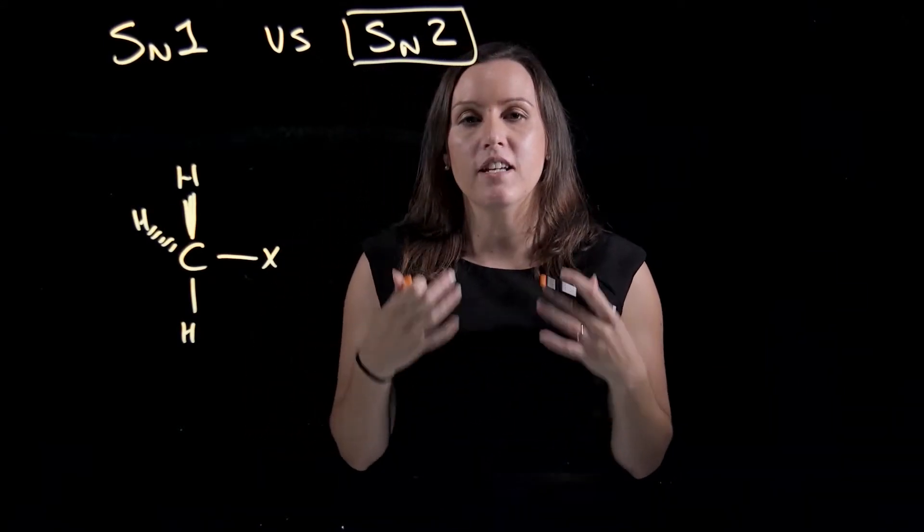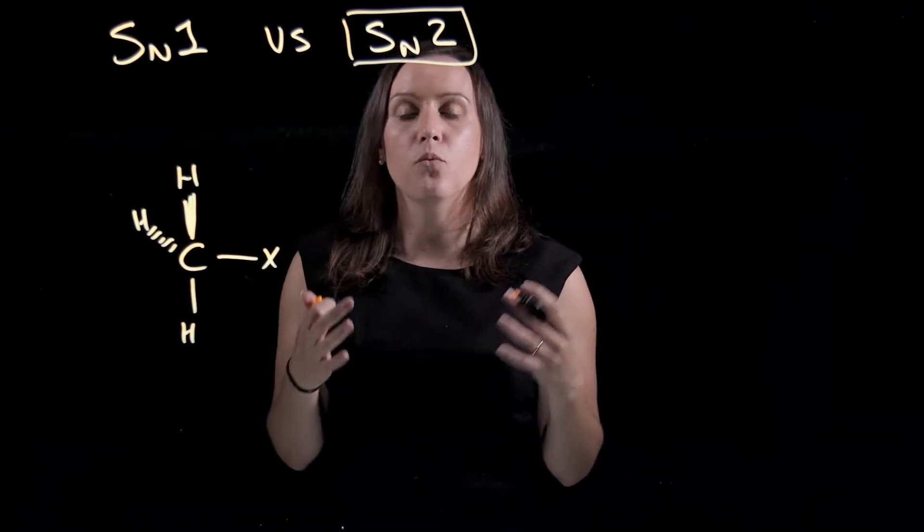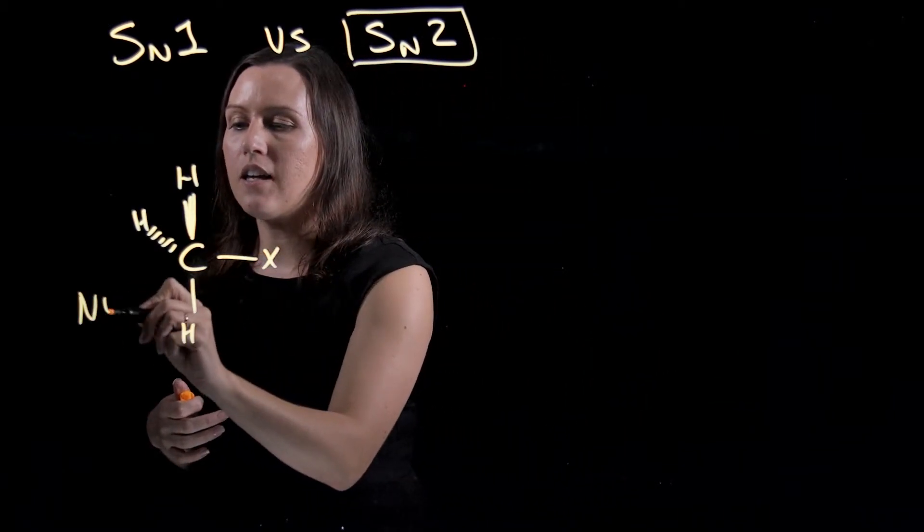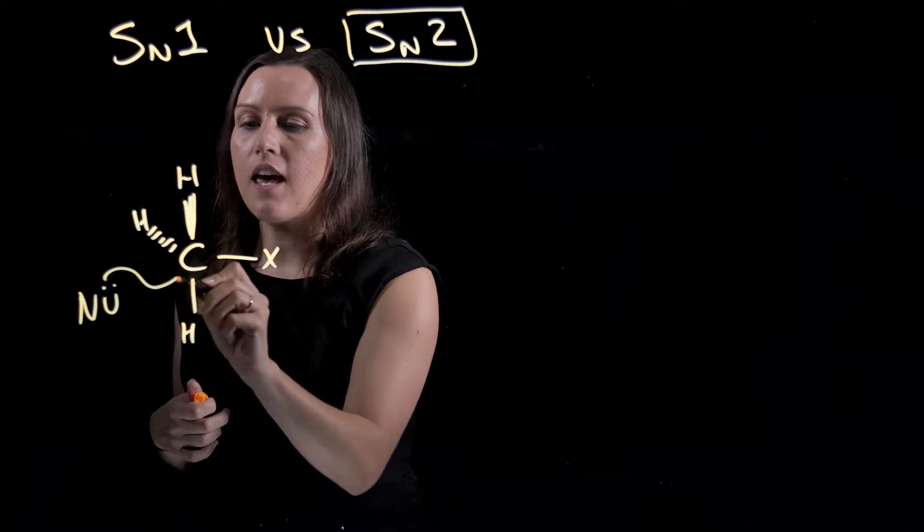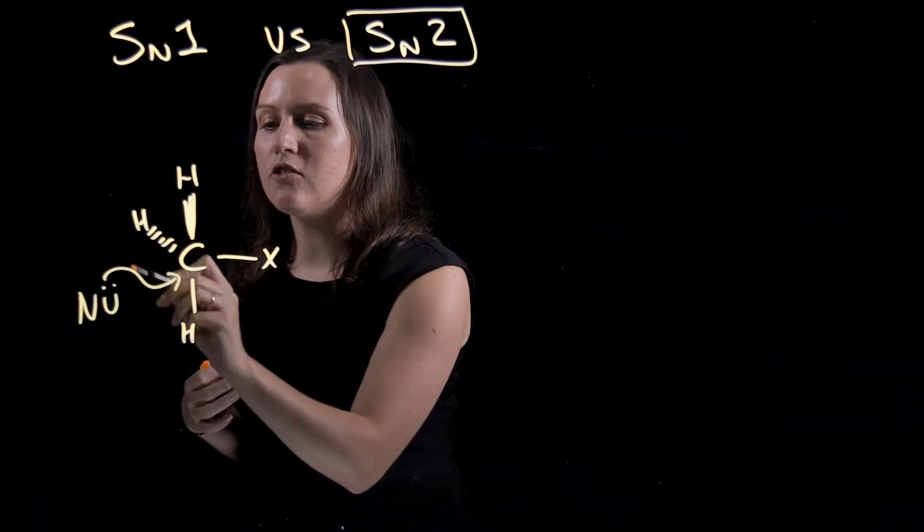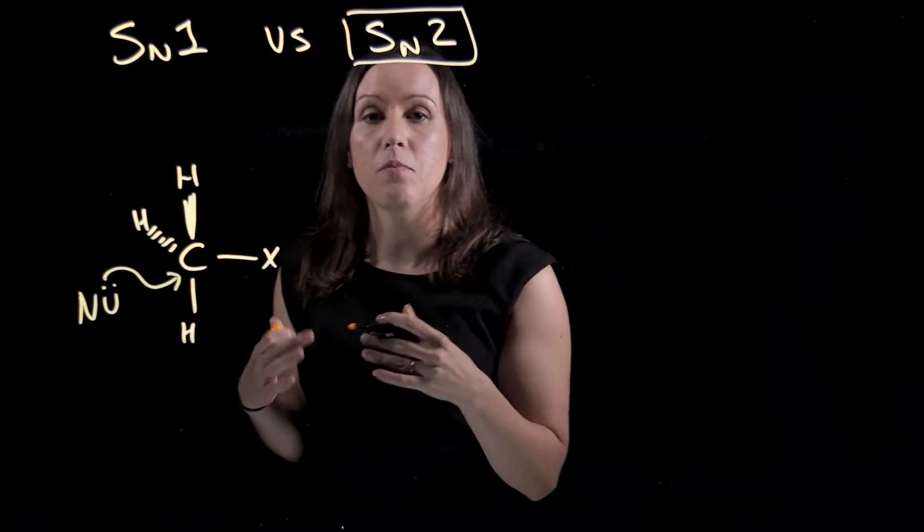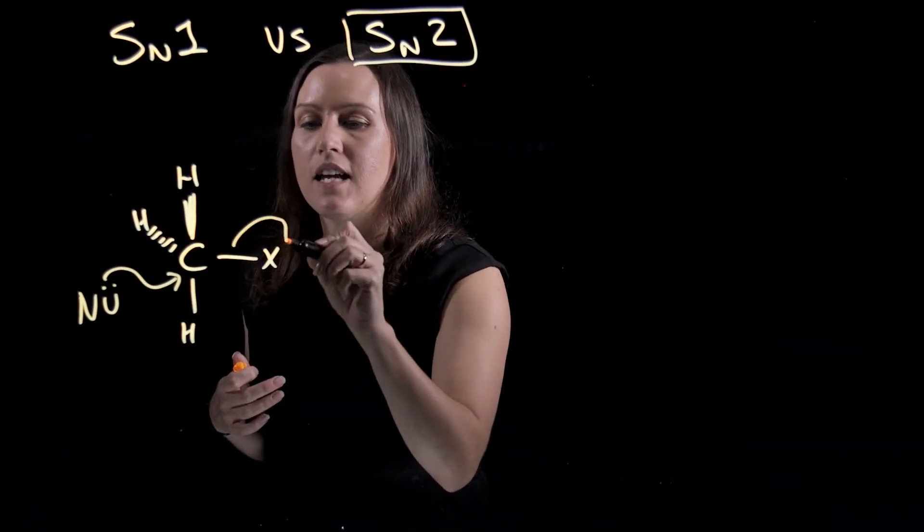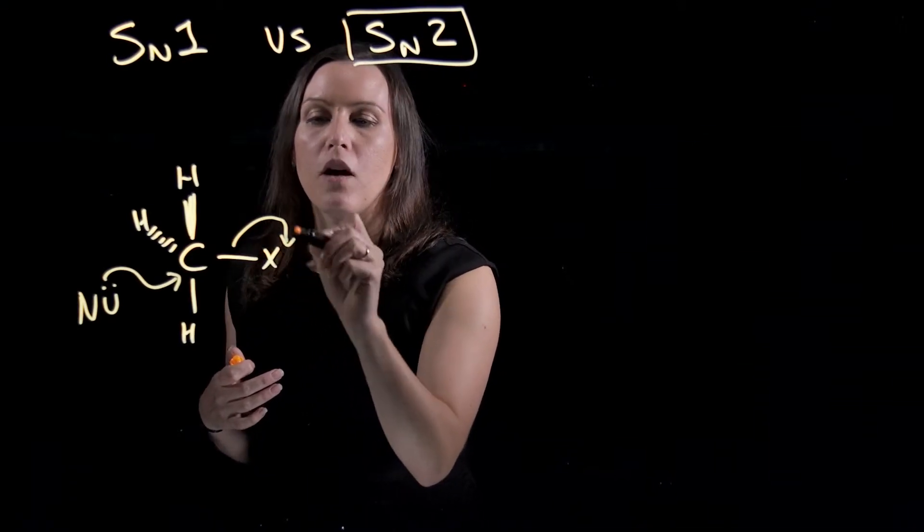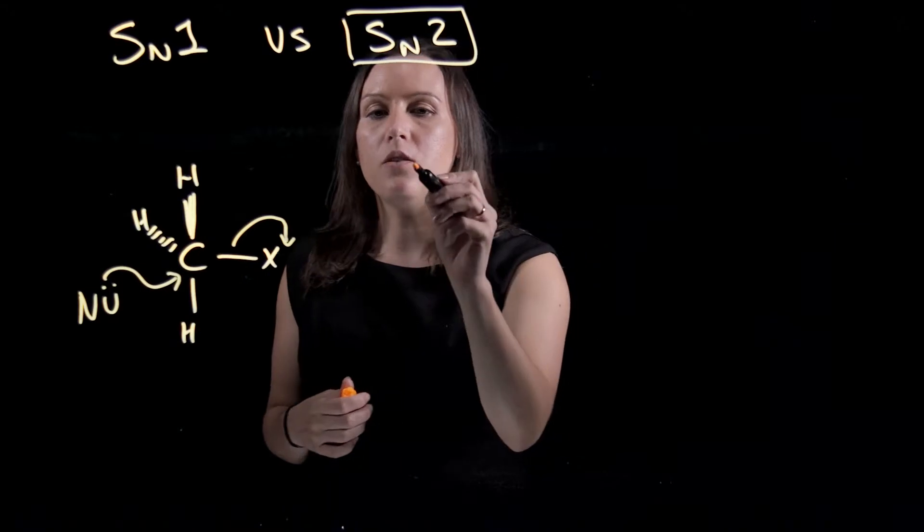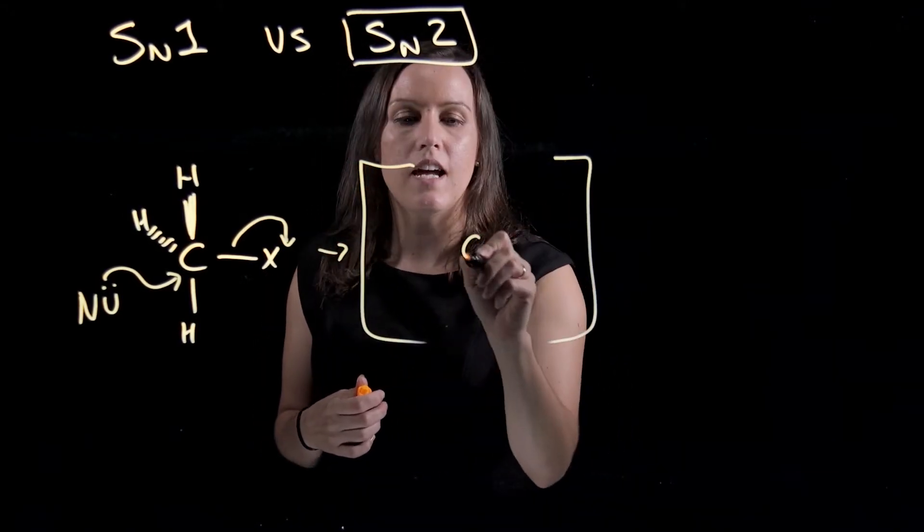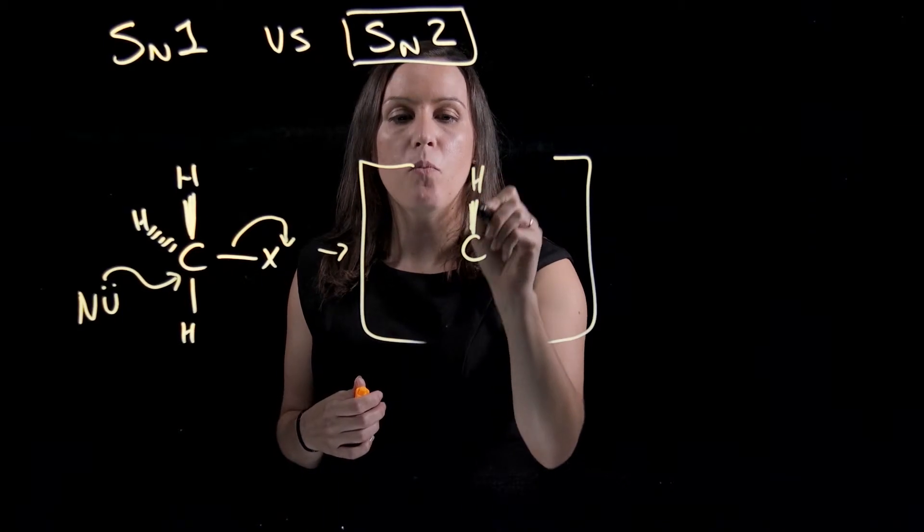So this one is a transition state. It has one transition state in the middle. We have our nucleophile again, I'll do a little smiley face, and it's coming in. As those lone pair of electrons is coming towards that carbon to make a bond, at exactly the same time the bonding electrons from this leaving group are going onto the leaving group. So we have this period where we call it a transition state where we have them both partially bonded.